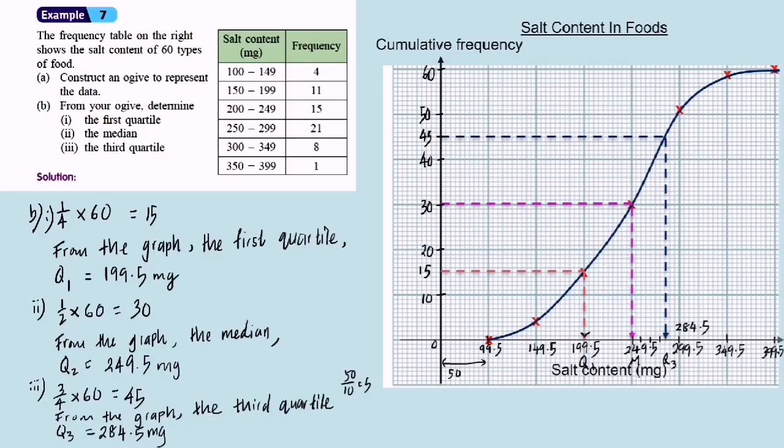What is the meaning of the quartile for this question? The meaning is the salt content of 45 types of food are less than or equal to 284.5 mg. That's all for today. Hope you understand what I taught you just now. If you feel that this video can help you, please like and share to your friends. Thank you.